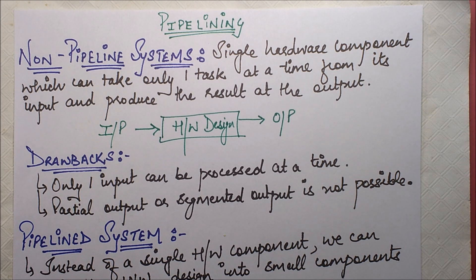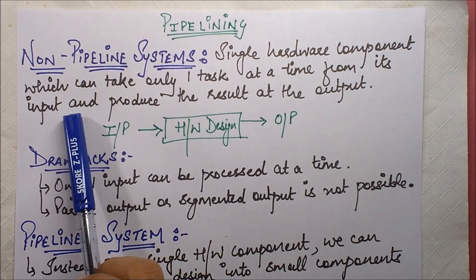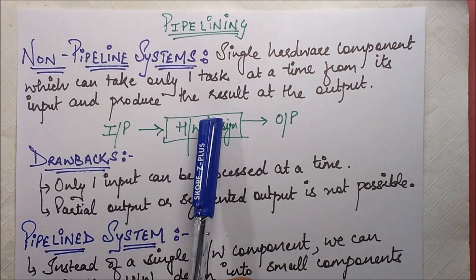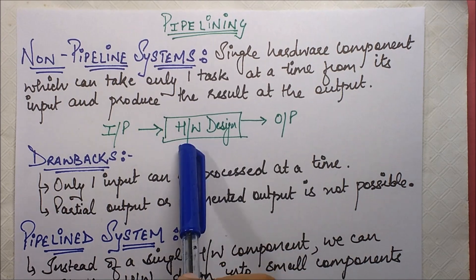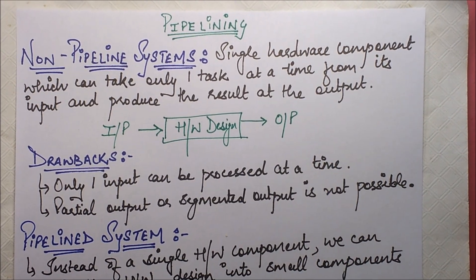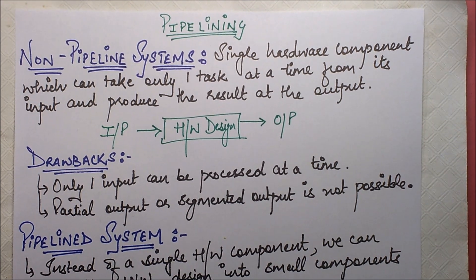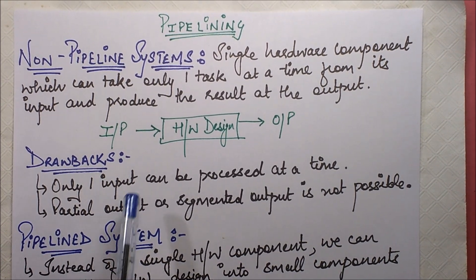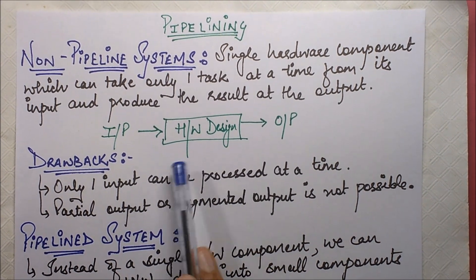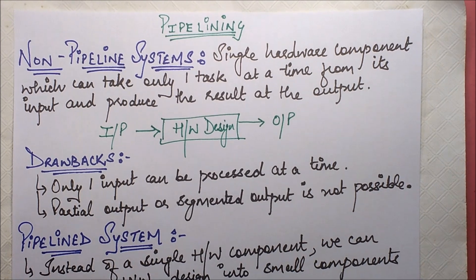Let's start with non-pipeline systems and how they are different from pipeline systems. In a non-pipeline system, there is a single hardware component which can take only one task at a time from its input and produce the result at the output. The drawback is that only one input can be processed at a time, and partial or segmented output is not possible. There is only one instruction being processed at a time.